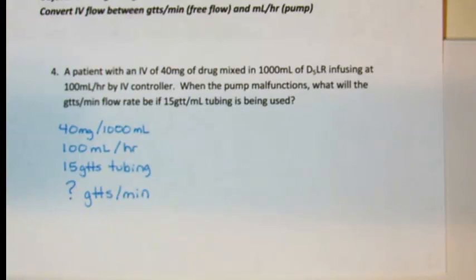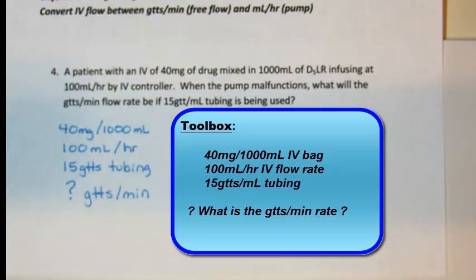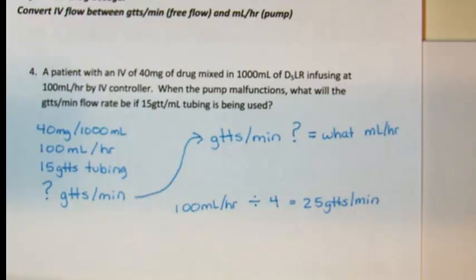The toolbox in this case shows 40 milligrams in 1000 milliliters, 100 milliliter an hour as the flow rate, tubing of 15 drops per milliliter, and a question of what is the drop per minute flow rate. Remember, when it comes to the toolbox, all information from the problem that has a number related is included so that we have everything we will need for completion.